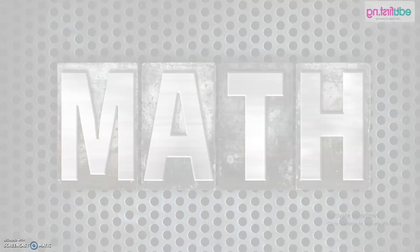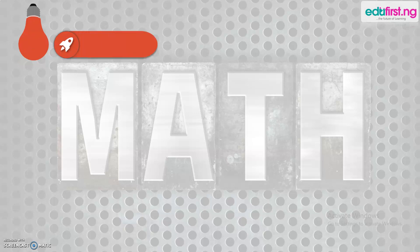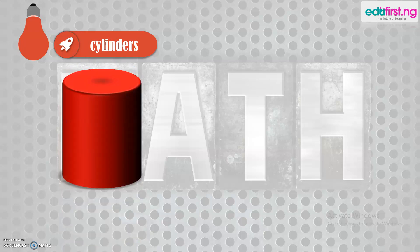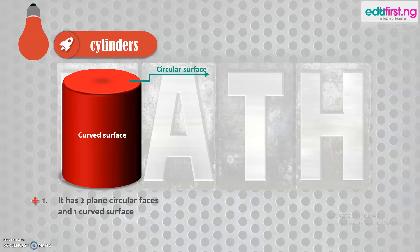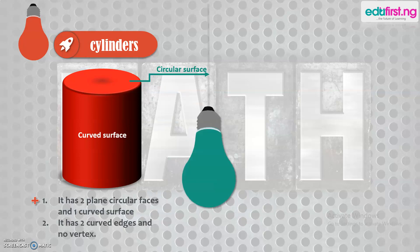Next on our list of solid figures is a cylinder. A cylinder can exist in the form of your tin, milk tin, or batteries and some other objects we have in the home. Here's what a cylinder looks like — it has a curved surface and a circular surface. The properties of a cylinder are: it has two plain circular faces and one curved surface, two curved edges and no vertex.